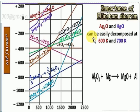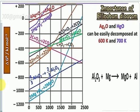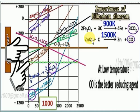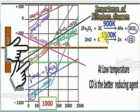Silver oxide and mercury oxide can be easily decomposed at around 600 Kelvins because their ΔG becomes positive above that temperature — meaning those oxides are unstable. Aluminum oxide is reduced by magnesium. For iron oxide, carbon at 900 Kelvins forms iron plus carbon dioxide. The Ellingham diagram explains at what temperature these reductions happen. At low temperatures, carbon monoxide is the better reducing agent.